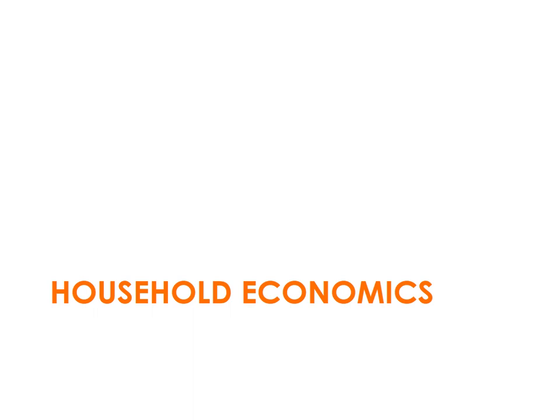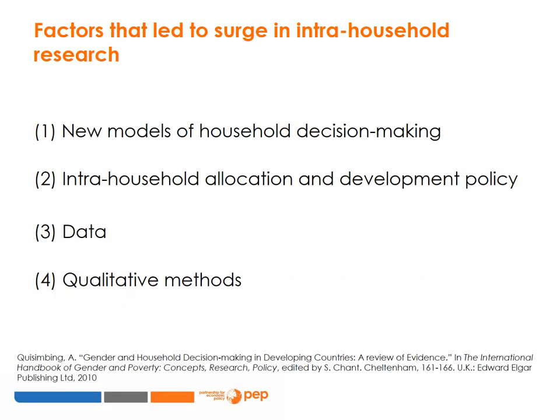This section on household economics foreshadows the module on economics of the household. The surge of intra-household research in the 1980s and 1990s and thereafter was due to four main reasons: the development of new models of household decision making; an increased awareness that paying attention to intra-household allocation matters in the design and implementation of development policy; the growing availability of data from developing and developed countries with which to test alternative household models; and the use of qualitative methods arising from increased collaboration with anthropologists and other social scientists to understand non-economic dimensions of human behaviour.